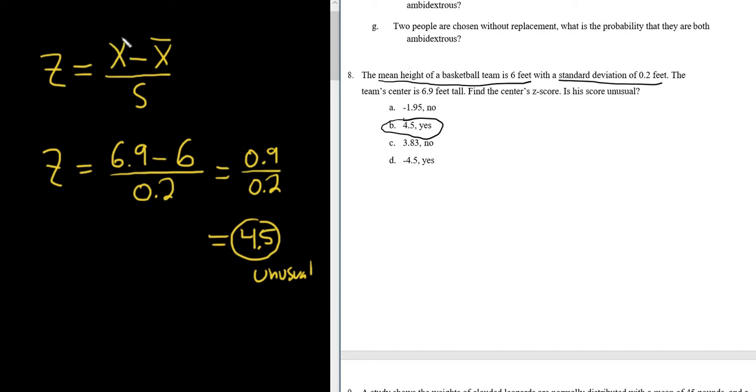So again, the formula, you just take the number, in this case the height, subtract the mean, divided by the standard deviation. You can think of it like this, x minus mean, divided by standard deviation. That's how I think of it, and then I just fill in the symbols.